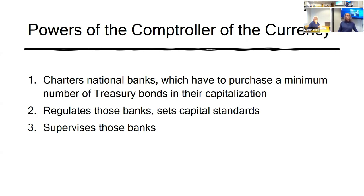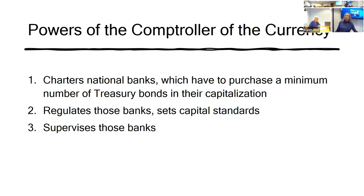This new agency would regulate the banks — setting standards for how much capital you had to have versus how much you would lend, more rigorous than state banks. There was resistance, of course. It was obviously to the benefit of the federal government because it meant banks would be purchasing bonds, building up the value of bonds on the market. Eventually, in order to get enough banks into the national system, Congress passed a 10% tax on bills not from a national bank — and that really got everybody in line.